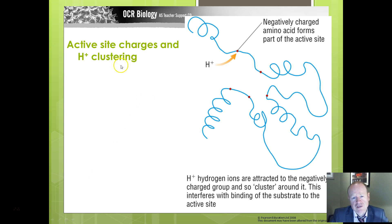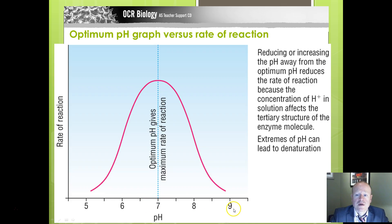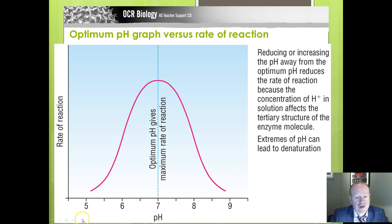In the tertiary structure, you get clustering of hydrogen ions attracted to particular R groups. If there are negatively charged R groups within the chain, hydrogen ions can be attracted to those and cluster around them, which can also affect how active sites work. On the graph here, there's an optimum around pH 7, and at the extremes you get denaturation because extreme pH values cause damage.